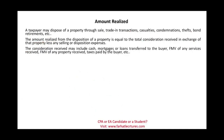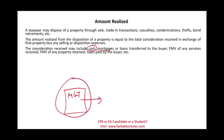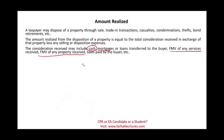The consideration might include cash — usually when you sell something you receive cash. Also included is any mortgage or loan transferred to the buyer. If you have a property with a mortgage and the buyer assumes it, that's more money to you because you no longer have to pay that mortgage. Fair value of any services received, fair market value of any property received, and if the buyer pays any taxes on that property — all of those are consideration received, included in the amount realized.